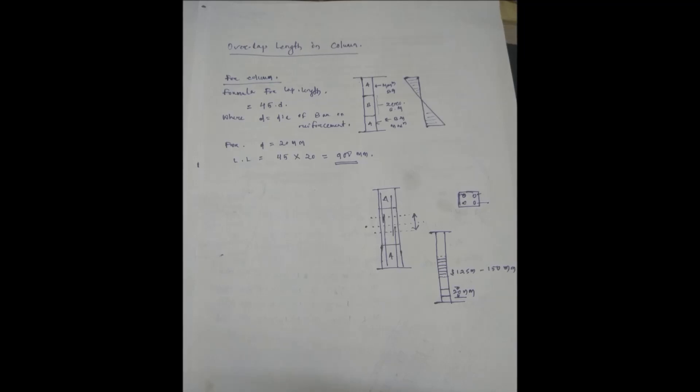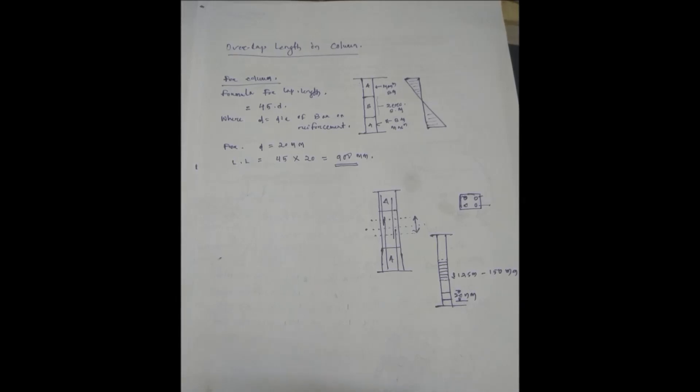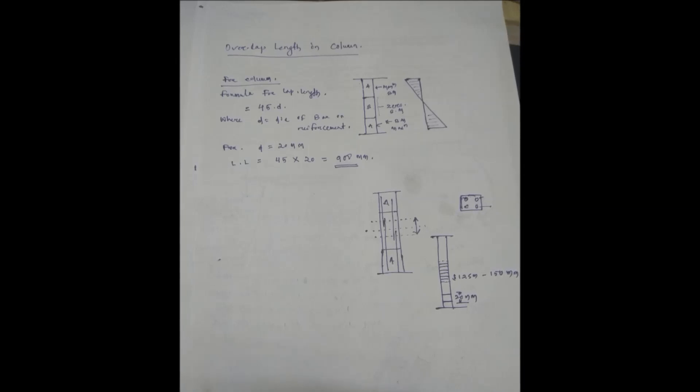example, if you use 20mm bar, then lapping length is equal to 45 × 20, that is equal to 900mm. Another thing is that in the lapping zone the spacing of stirrups should be less - it should not be higher than 150mm from center to center distance of stirrup.